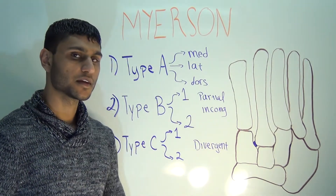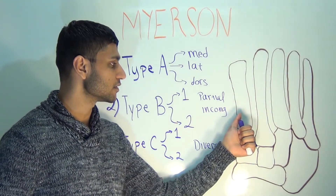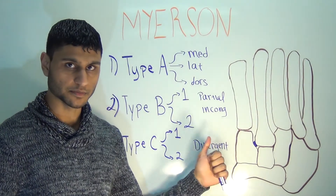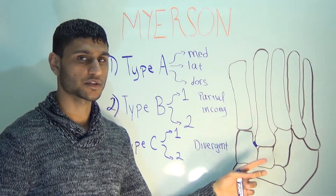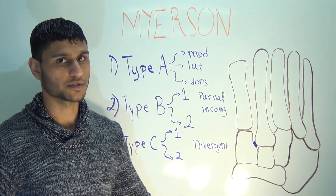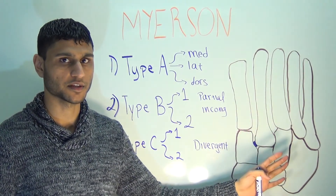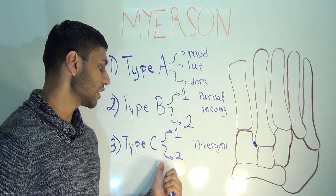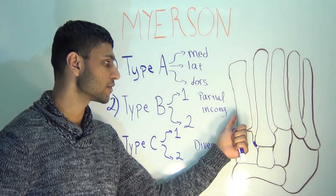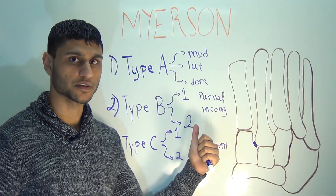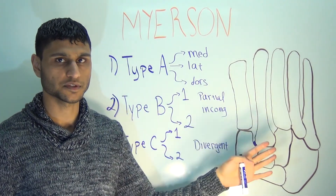A type C injury is known as divergent. Type C1 is when the first metatarsal dislocates medially and one, two, or three of the lesser metatarsals dislocate in the opposite direction — so not all metatarsals are dislocating, just some of them. In type C2, there is complete divergence: the first metatarsal dislocates medially and all of the lesser metatarsals as a unit dislocate in the opposite direction.